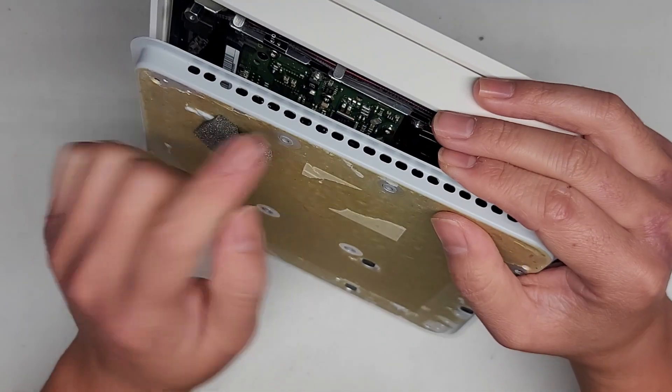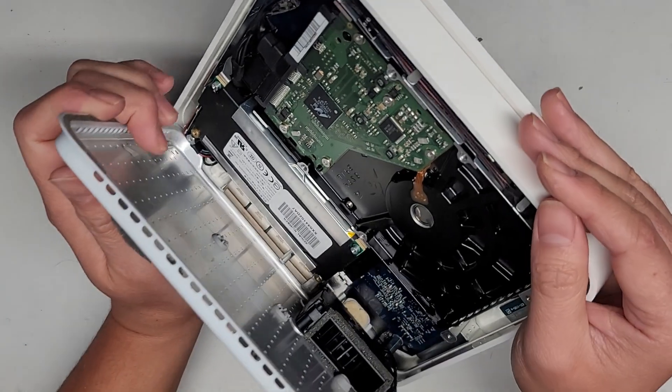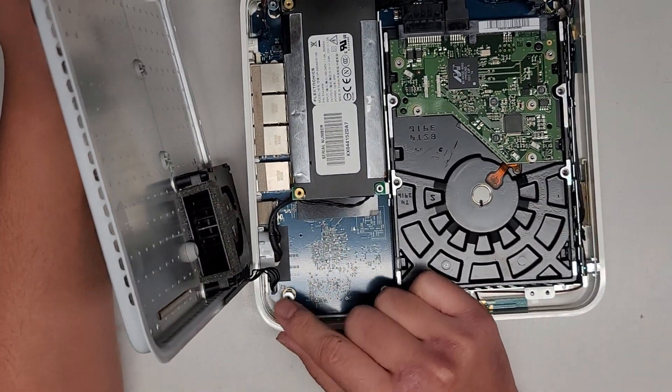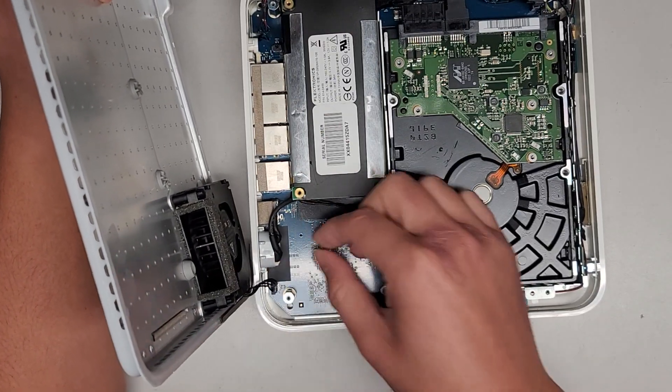And there you go. So you can see we used this vent hole to pull it up. And then you can swing this over, and you can see the connector here. So if you really wanted to, you can remove the fan connector here.